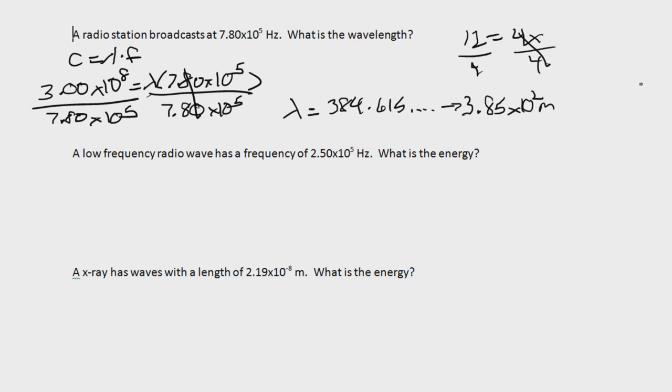Let's take a look at the next one. A low-frequency radio wave has a frequency of 2.50 times 10 to the 5th hertz. And what is the energy? So once again, we are given frequency, but this time it's asking for energy. Well, that's the other equation. E equals H times F.